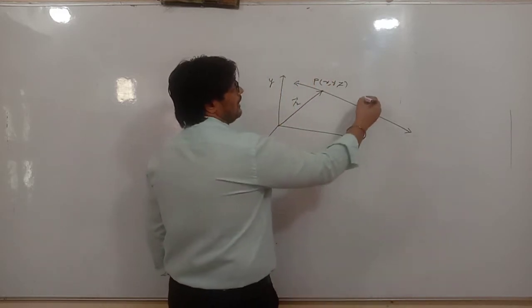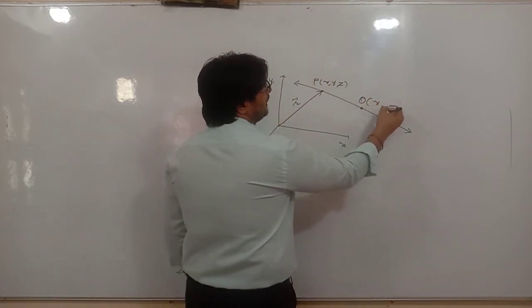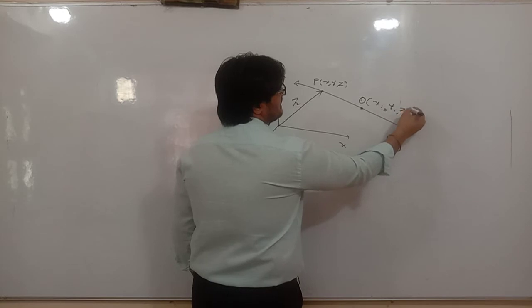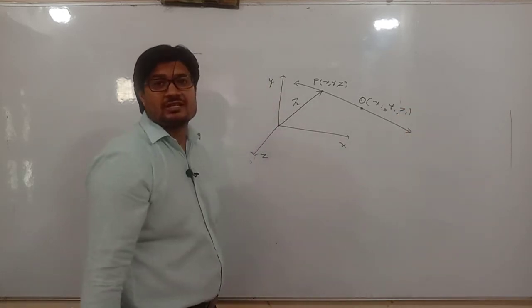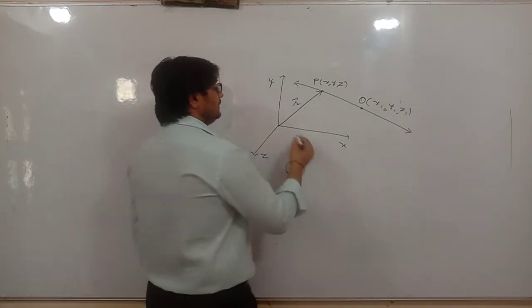You will have point Q, and the coordinate of this point will be x1, y1, z1. I have to call this coordinate x1, y1, z1. Right? This is what I have.